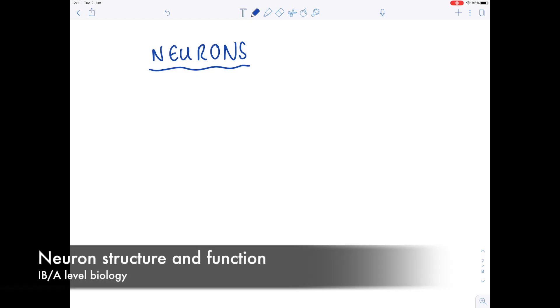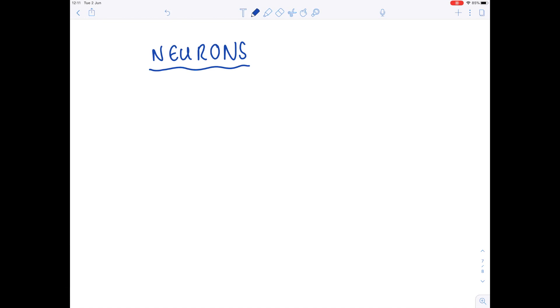In this A-level IB Biology video, we're going to be looking at the structure and function of neurons as well as a fully labelled diagram of the motor neurons so you can understand how the different parts of that motor neuron operate in order to carry out its function.